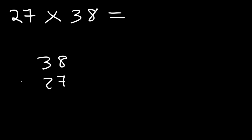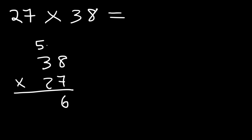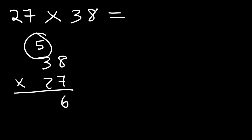We set it up and the first thing we need to do is multiply 8 by 7. 8 times 7 is 56, so we write the 6 and carry over the 5. Next we multiply 3 times 7, which is 21, and then add the 5, which gives you 26.